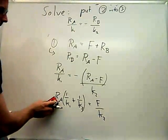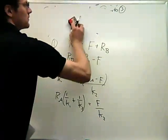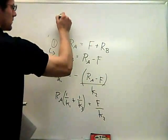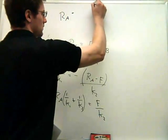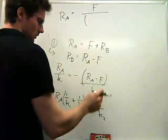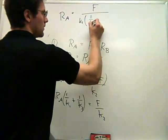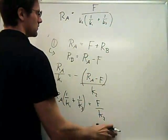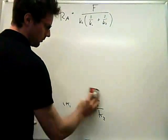So then if I want RA, I can just divide by this. So that's F divided by K2 times 1 over K1 plus 1 over K2, and then I can just do some algebraic manipulation to make this look a little bit nicer.